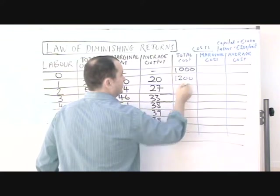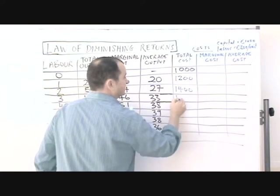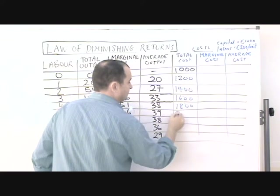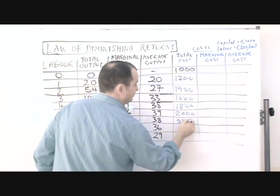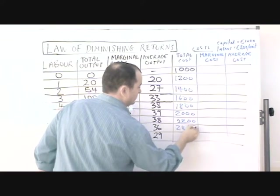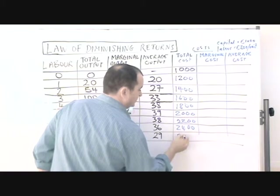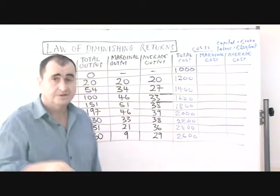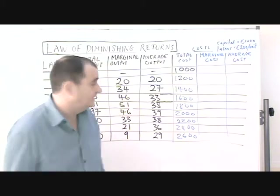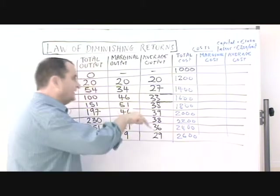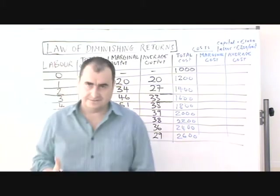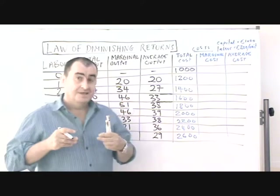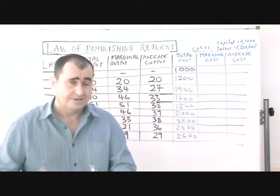So I can straight away just put in all of these total costs, just increasing by 200 every time until I get to 2600, which is 1600 cost of labour — eight units of labour — plus the 1000 of the fixed costs for the land and the fixed capital. Those are the total costs. Now here's a bit that people get tripped up on.